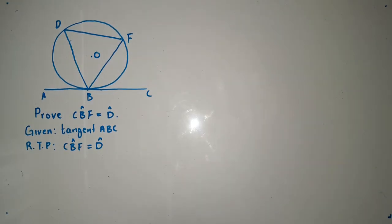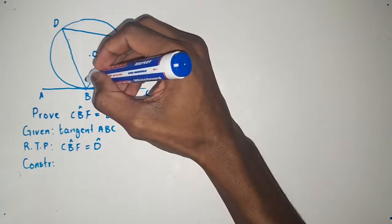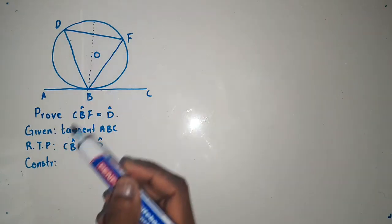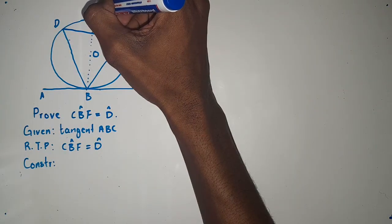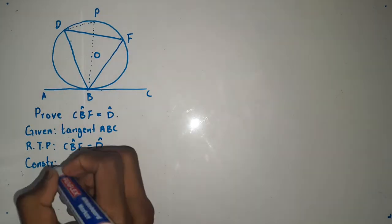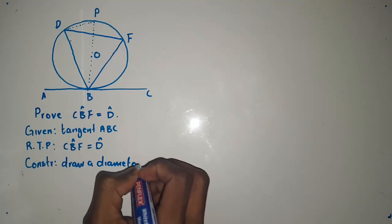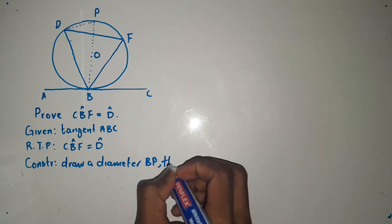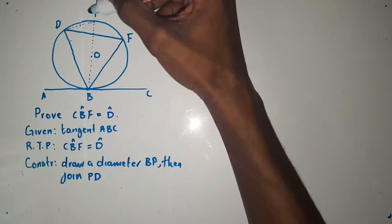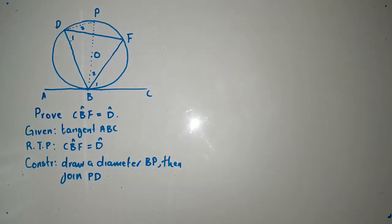In order to prove this, we are going to construct by drawing a diameter. Let's call it PC. Then immediately after doing this, we join P to D. We label the angles one and two as shown.